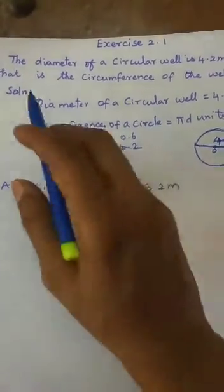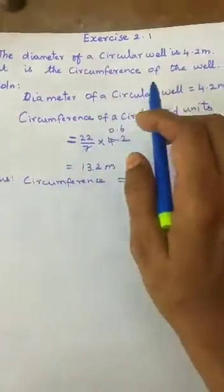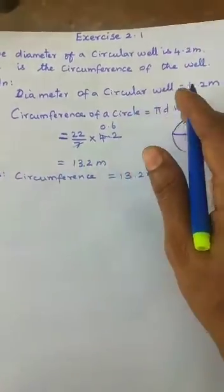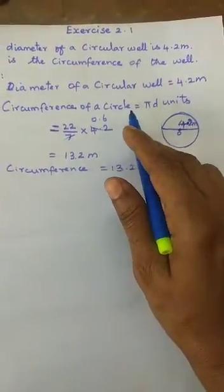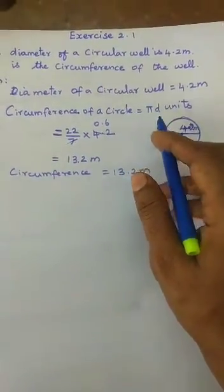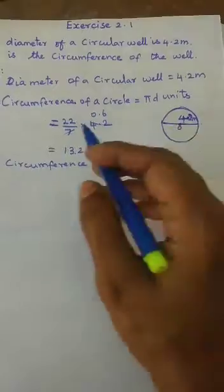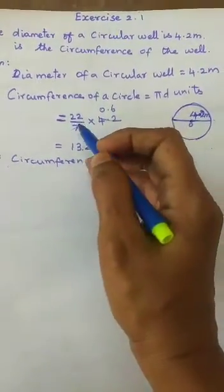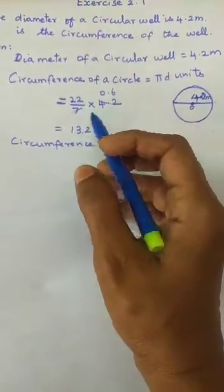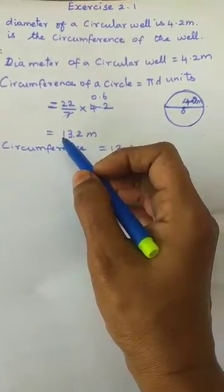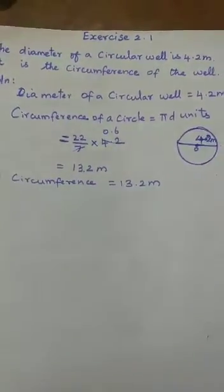Exercise 2.1 fourth problem: The diameter of a circular well is 4.2 m. What is the circumference of the well? Solution: Diameter = 4.2 m. Using the diameter formula, circumference = πd = (22/7) × 4.2. Cancel 7 and 4.2: 4.2 ÷ 7 = 0.6. So 22 × 0.6 = 13.2 m. The circumference of the well is 13.2 m.